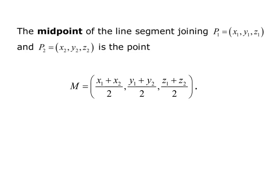The midpoint of the line segment joining point P1, defined as x1, y1, z1, and point P2, defined as x2, y2, z2, is the point capital M equals x1 plus x2 quantity over 2. That will be our x component. The y component is the sum of y1 and y2 divided by 2, and the z component is the sum of z1 and z2 divided by 2.